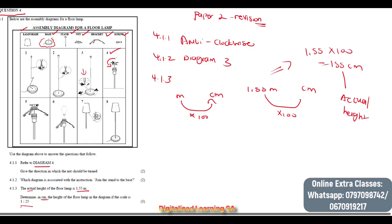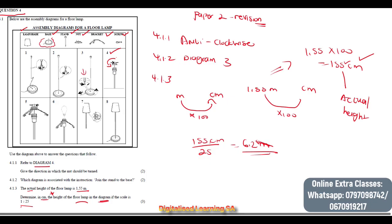Now we need to find the height of the floor lamp in the diagram, given the scale is 1 to 25. The 155 centimeters is the real-life measurement, so to find the height on the diagram we calculate 155 divided by 25. The answer will be 6.2 centimeters. Remember it needs to be in centimeters — 6.2 centimeters.